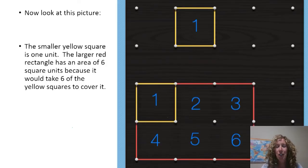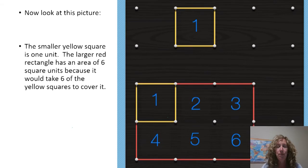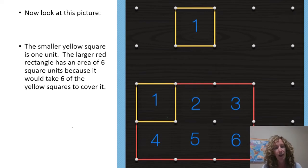Now check out this picture I made on a GeoBoard. The small yellow square on the top is one unit that we're going to use to measure the surface area of that red rectangle. You can see that it's going to take six of those yellow squares to cover the surface of the red rectangle. So we would say that the red rectangle has an area of six square units.